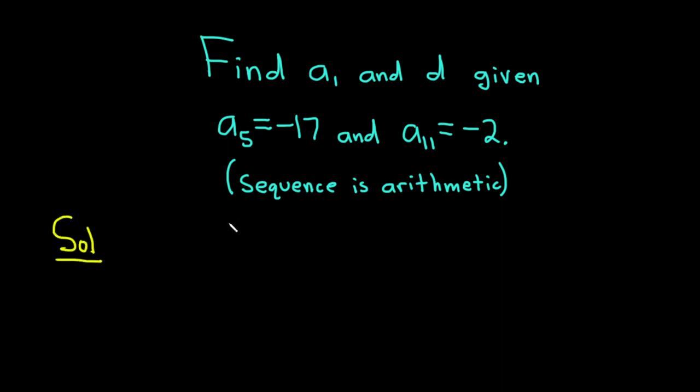We have an arithmetic sequence and we have to find a₁, which is the first term, and d, which is the common difference. Let's start by finding d. To find d, we have to create an equation using a₅ and a₁₁. You want to write the one with the higher subscript first, so a₁₁.